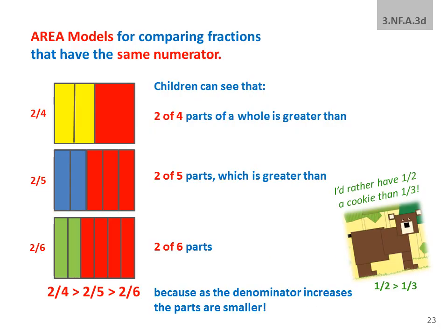Comparing fractions that have the same numerator but different denominators might be best introduced using rectangular area models. Children can see that as they cut rectangles into more and more equivalent pieces — into fourths, or sixths, or eighths — the pieces get smaller, and they will need more of the smaller pieces to cover the same area. As Square Bear would put it: I'd rather have 1 half a cookie than 1 third of a cookie. 2 fourths is greater than 2 fifths is greater than 2 sixths — but write it down. And that's the last standard for grade 3.